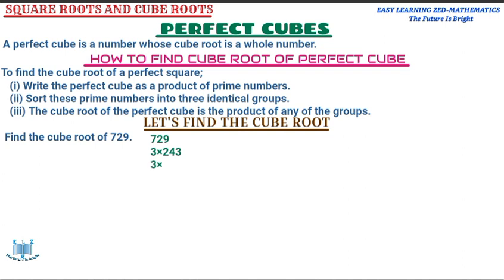Now I'm going to express 243 as a product of a prime number and another number. Two leaves a remainder, but three goes into 243 without a remainder. Three into 243 goes 81 times. So multiplying three by three by 81 gives 729. I've now found two prime factors, both three.